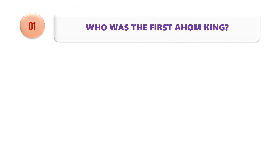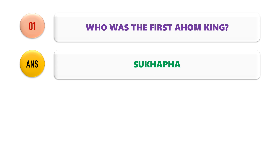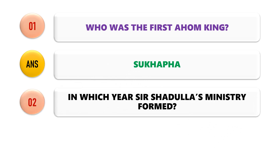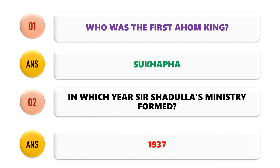First question: Who was the first Ahom King? The answer is the first Ahom King was Sukapa. Next question: In which year was Sarsadullah's Ministry formed? Sarsadullah's Ministry was formed in the year 1937.